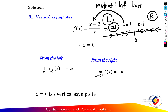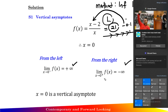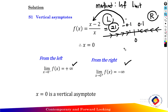So the limit as x approaches 0 from the left of f(x) equals positive infinity. From the right, substituting 0.1: 0.1 minus 2 over 0.1 gives a negative result, so the limit as x approaches 0 from the right of f(x) equals negative infinity. Conclusion: x equals 0 is a vertical asymptote of the rational function.